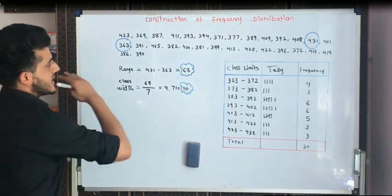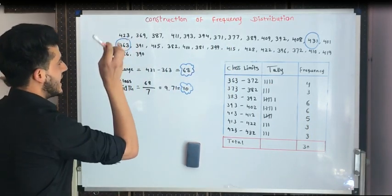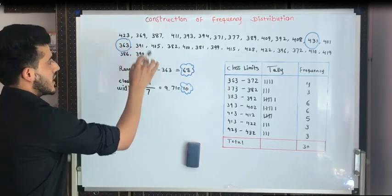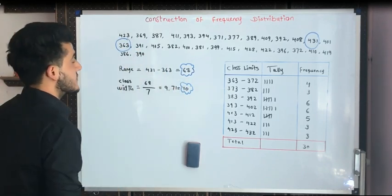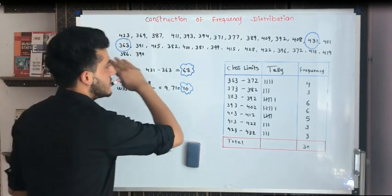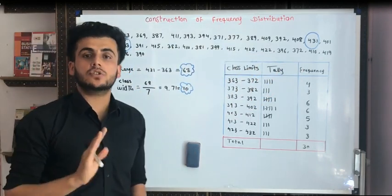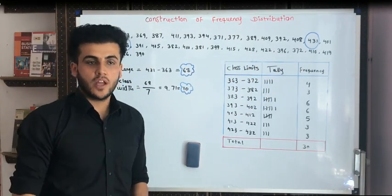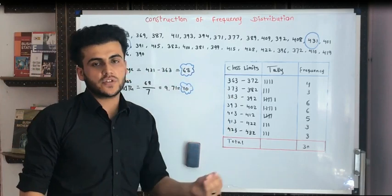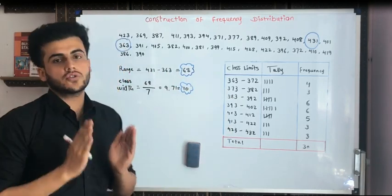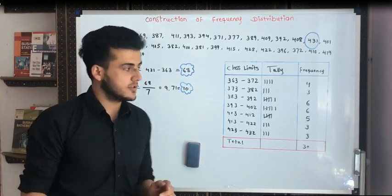We are having this type of data: in one school we are having 423 students, in another school 369 students, in another school 387 students, and continuously going on, completing the 30 schools with many kinds of differences. Now, we have to construct them in a very nice format.